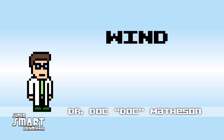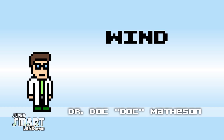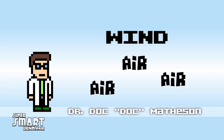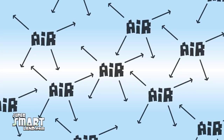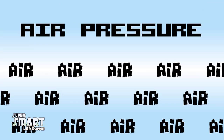Simply put, wind is the motion of air molecules. Air molecules are always moving, colliding with each other and any objects at ground level. Air pressure is the amount of force that these molecules impart on a given area. In general, the more air molecules present, the greater the air pressure.